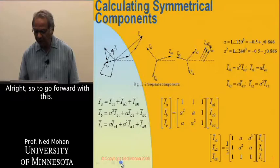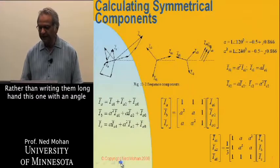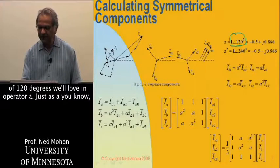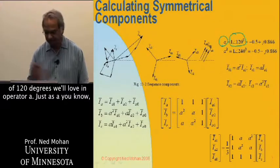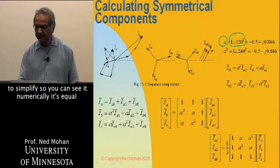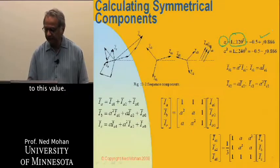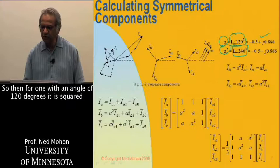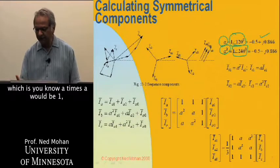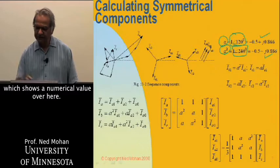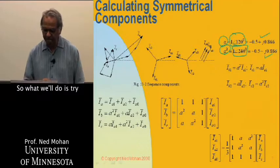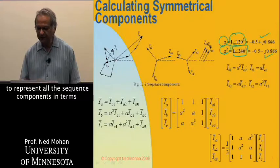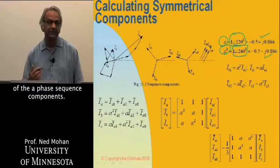To go forward with this, rather than writing them longhand, this one with an angle of 120 degrees, we'll use an operator A to simplify. You can see numerically, it's equal to this value. And then for one with an angle of 120 degrees, it's A squared, which is A times A would be one times angle of 120 degrees, which has a numerical value over here. What we will do is represent all the sequence components in terms of the A phase sequence components.